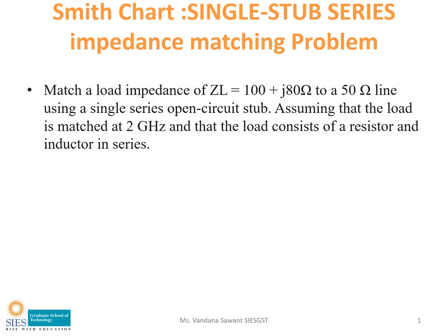Hello friends, today we will see design of single stub series impedance matching network with the help of a Smith chart. For this we will take a problem: match a load impedance of ZL equals 200 plus J80 ohm to a 50 ohm line using a single series open circuit stub, assuming that the load is matched at 2 gigahertz and that the load consists of a resistor and inductor in series.